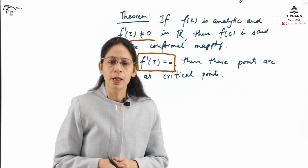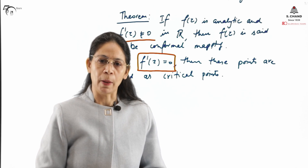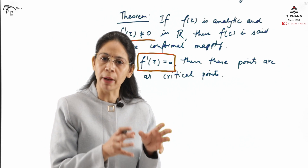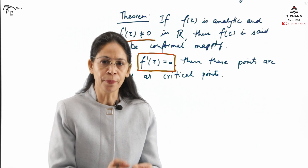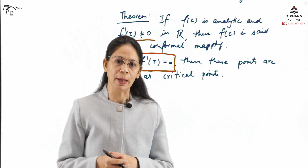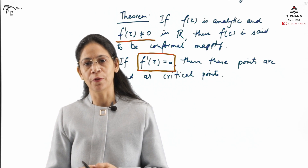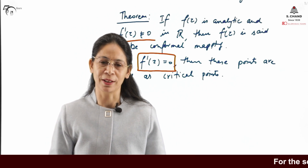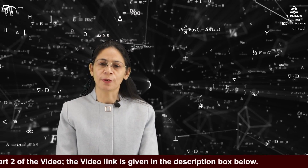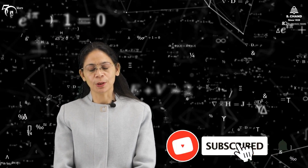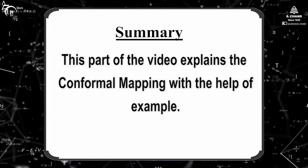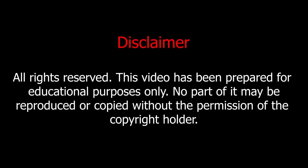This is all about conformal mapping. In this part of the video we learned what transformation means, how a complex function transforms the xy plane to the uv plane, and when a mapping is said to be conformal. In the next part we will take one example for conformal mapping and then move to the next topic: Möbius transformation. For in-depth knowledge, refer to the book from S.Chan Publishing — details and link are in the description box. Please like, share, and subscribe, and press the bell icon for upcoming video notifications. Thank you very much.